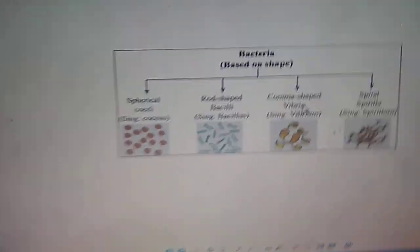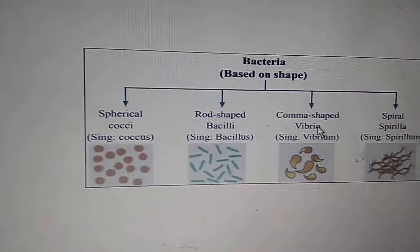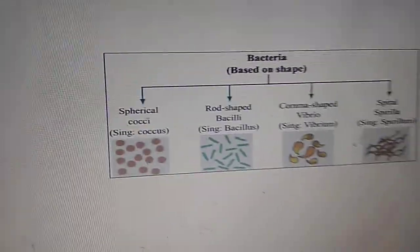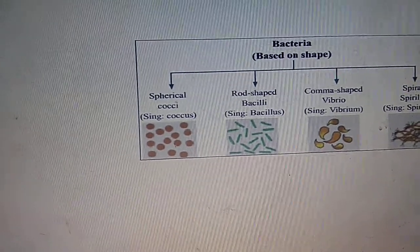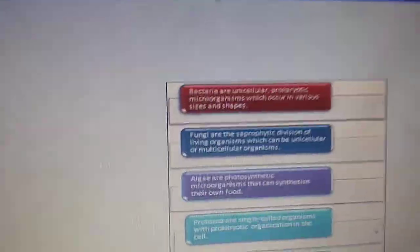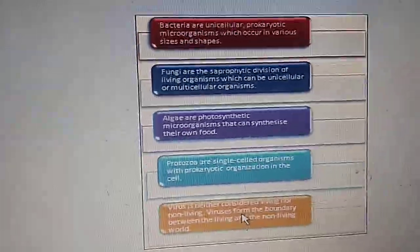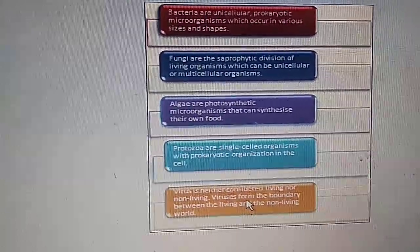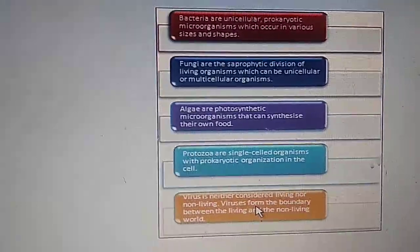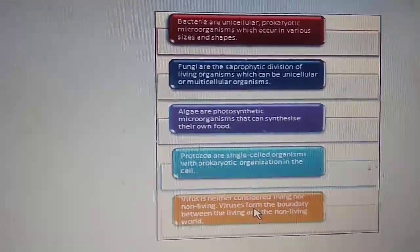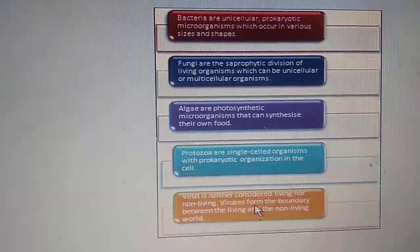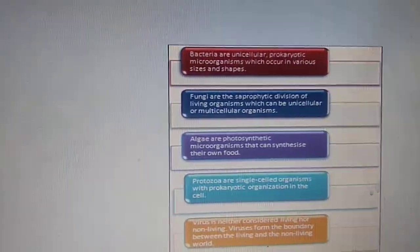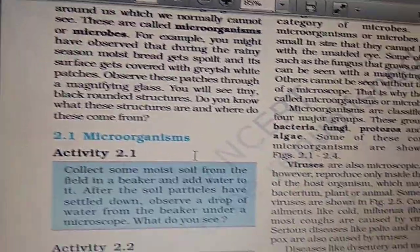Bacteria can appear in spherical shape, rod shape, or comma shape. Bacteria are unicellular prokaryotic microorganisms. Fungi are saprophytic — they feed on dead and decaying matter. Algae are photosynthetic; they are green in color, have chlorophyll, and can make their own food. Protozoa are single-celled and unicellular. Viruses are not considered fully living or non-living — they are only capable of reproduction inside the host; outside, they are not living.